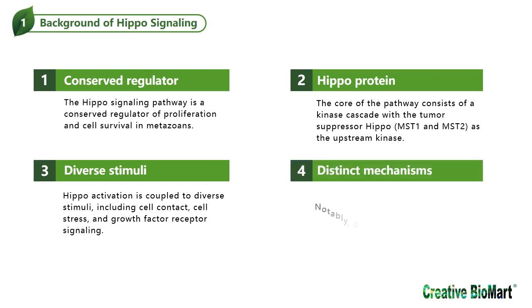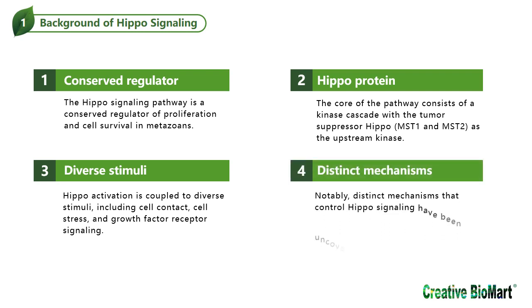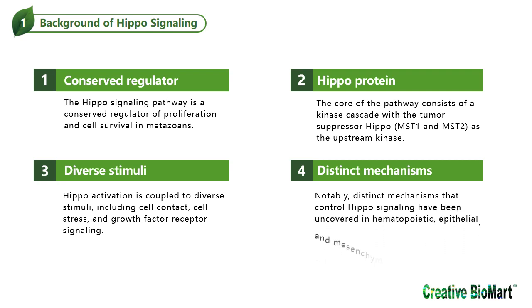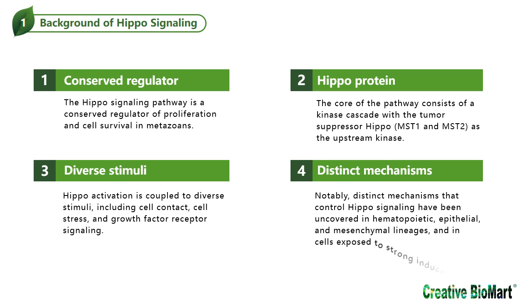Notably, distinct mechanisms that control Hippo signaling have been uncovered in hematopoietic, epithelial, and mesenchymal lineages, and in cells exposed to strong inducers of apoptosis.